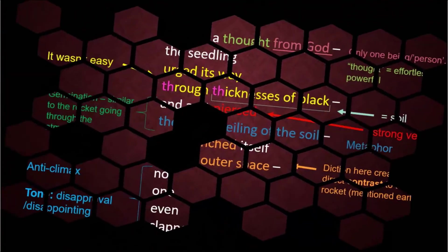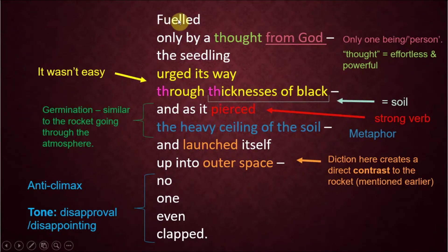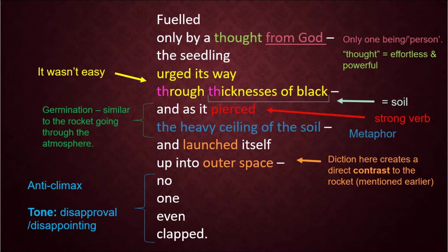The second part of the poem is God's creation, and starts similarly: 'fuelled,' but in this case 'only by a thought from God.' God is not just a person — he has greater power — and it only took one being. It didn't take a million people, just one. And a thought didn't take hours and months; it was simply a thought from God. That thought is effortless — you can think something easily, it doesn't take much effort. This shows the parallel structure between how much effort it took to build a rocket versus how little effort it takes for the seedling to push through the soil. The word 'thought' is also powerful because God can just think something and it happens.